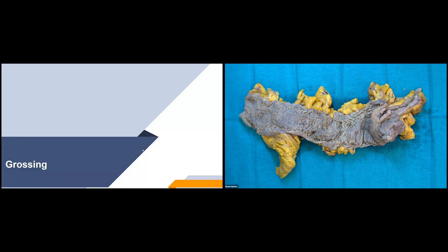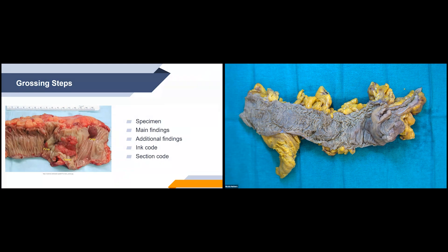Now we're going to go through the grossing steps. No matter what type of cancer your specimen is out for, most of the grossing steps will be the exact same — we'll still be doing all of the measurements, distances to margins, all of the basic things for any cancer case. To identify the specimen: it's a right hemicolectomy specimen. Then our next step would be our main findings, additional findings, ink code, and section code. We'll go through each one of those categories.